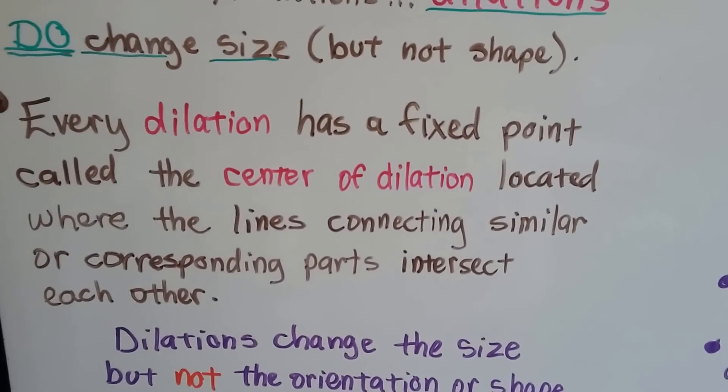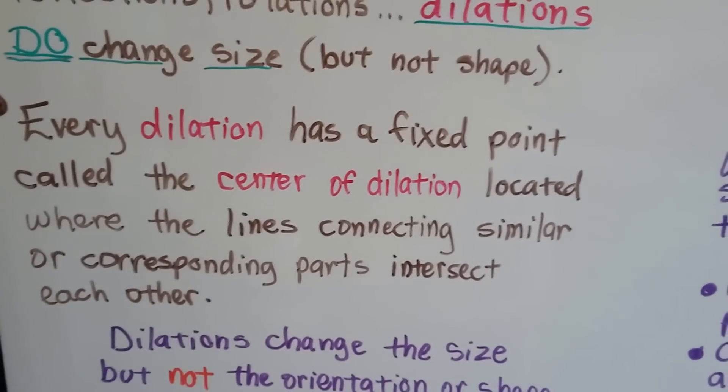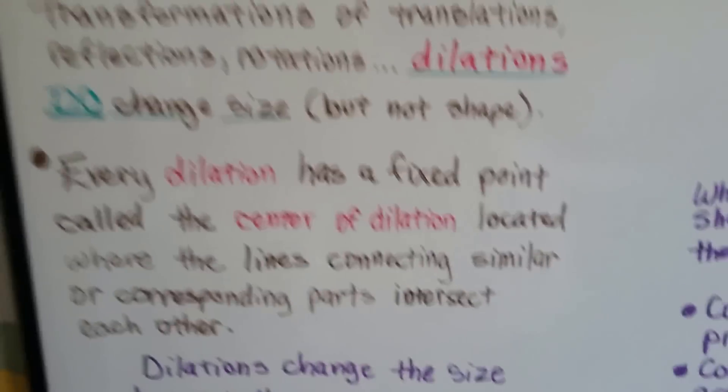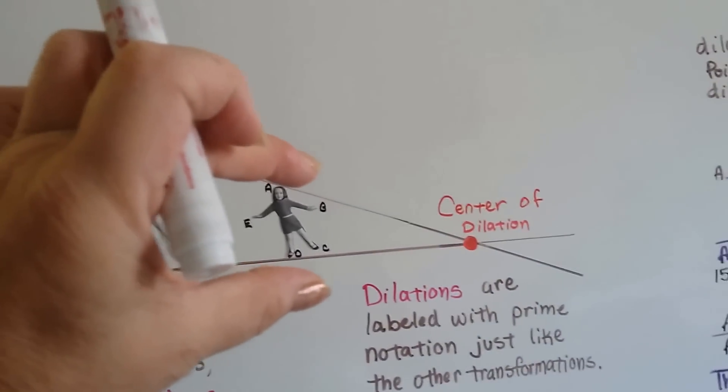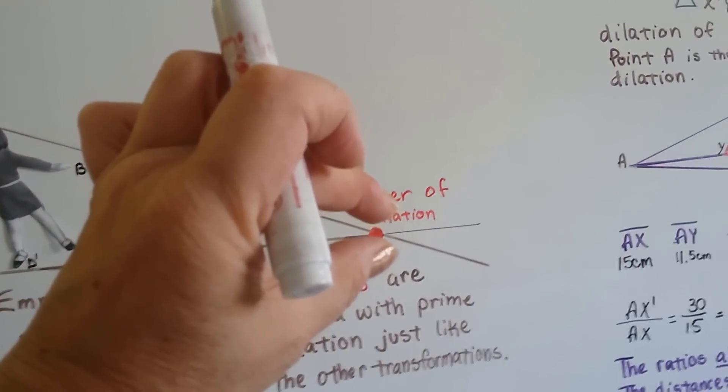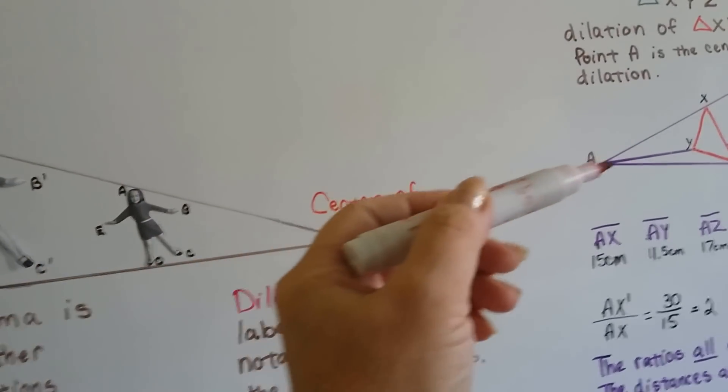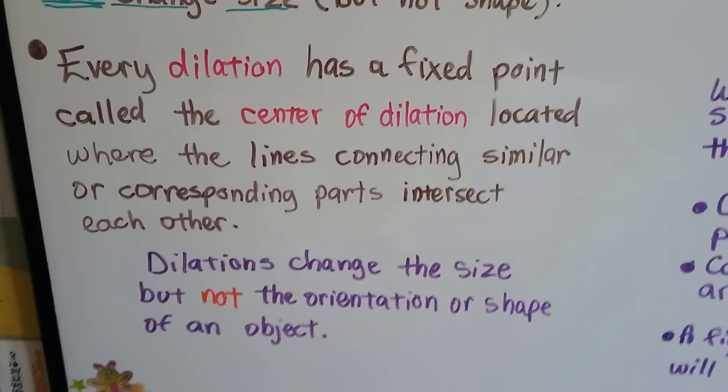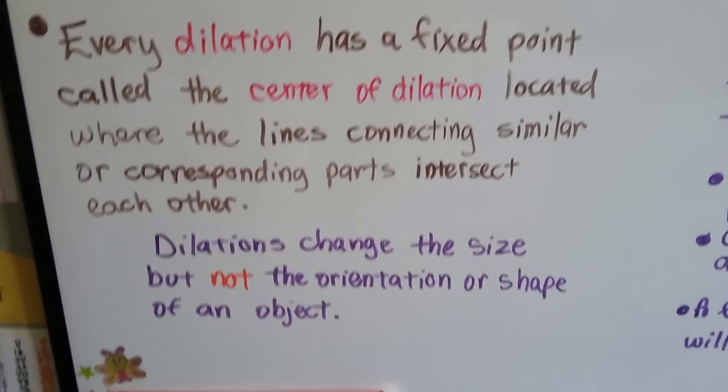So, every dilation has a fixed point called the center of dilation. And it's located where the lines connected similar or corresponding parts intersect with each other. So, her head and feet are touched by this line, and they go down to the center of dilation. And it actually would continue on like that across it. That's where they meet. Dilations change the size, but not the orientation or shape of an object.